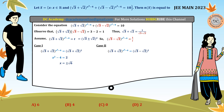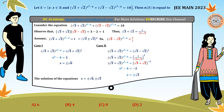In Case 2 (minus sign), the base on one side is (√3 + √2) and on the other is (√3 − √2), which are not the same. Since they are reciprocals, we convert (√3 − √2) to (√3 + √2)^(−1), giving x² − 4 = −2, so x² = 2 and x = ±√2. Therefore the solutions of the given equation are ±√2 and ±√6.